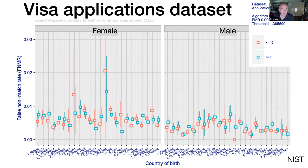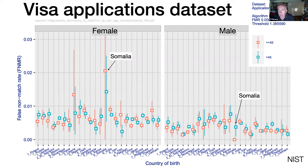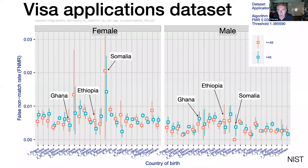What you see is that some countries have very high error rates — Somalia, for example, has the highest error rate for females but the lowest for males. That doesn't sound too good. But then you look at Ghana and Ethiopia, which border Somalia, and they show the same performance for females and males. So is there bias or isn't there? We don't know. It's not easy to measure bias, and these numbers are difficult to interpret.